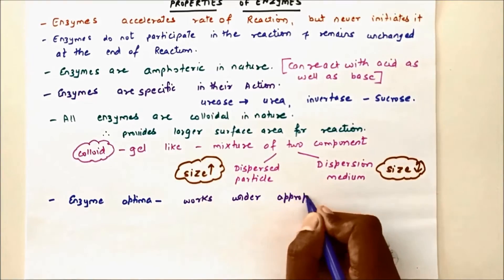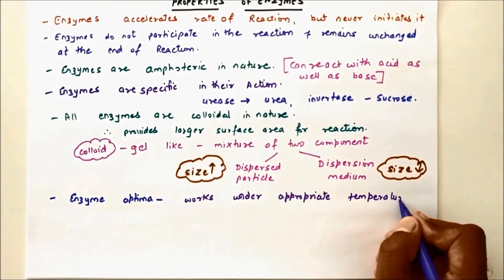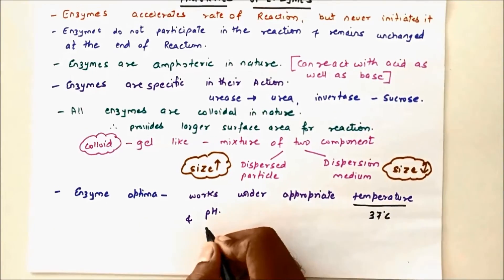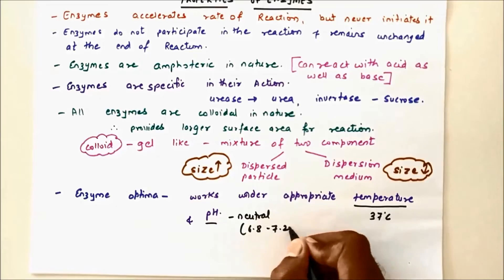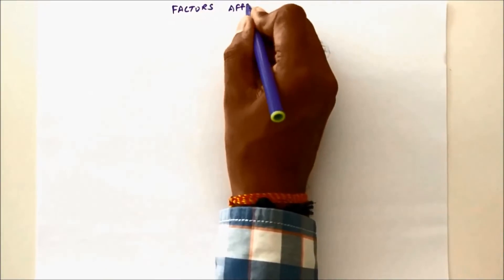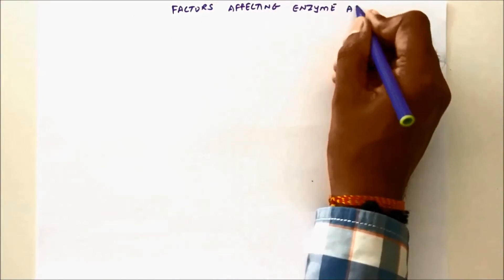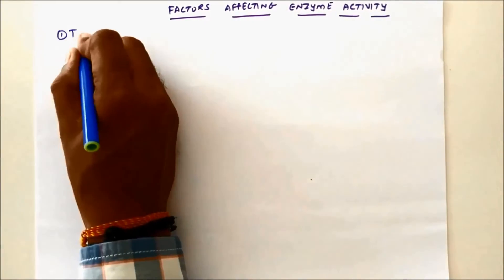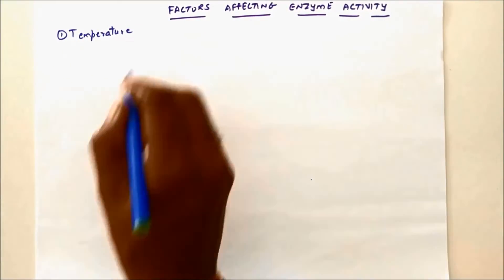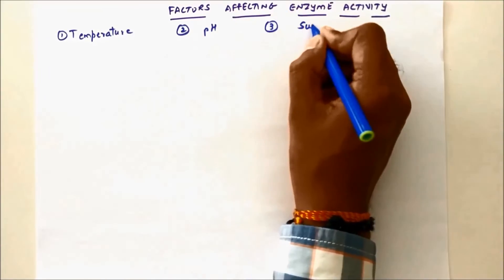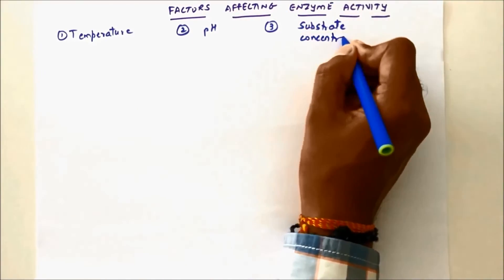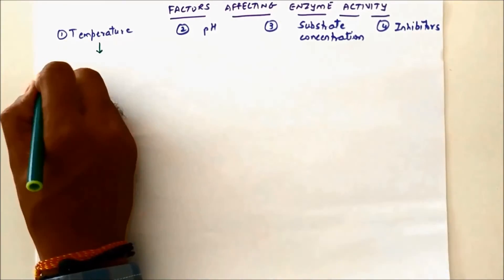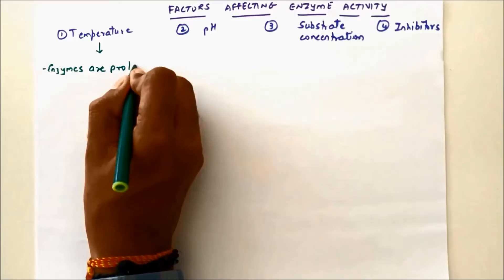Enzyme optima means the maximum activity of the enzyme — it works at the appropriate temperature of 37°C and a neutral pH. Factors affecting enzyme activity include: temperature, pH, substrate concentration, and inhibitors.